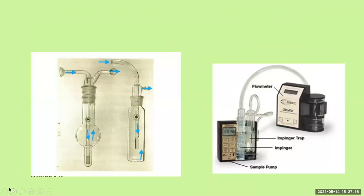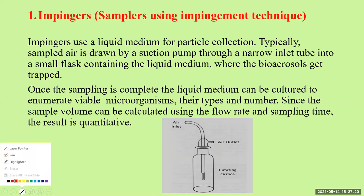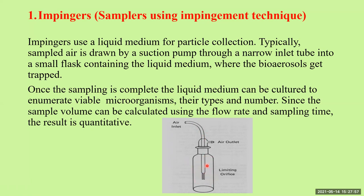Sampled air is drawn by a suction pump through a narrow inlet into a small flask containing liquid medium where the bioaerosols get trapped. Through the air sampler, a definite volume of air is sucked in. Through the narrow inlet tube, it goes into the flask containing liquid medium where the bioaerosols present in the air get mixed with the liquid medium. Once sampling is complete, the liquid medium is taken out from the bottle and it is cultured.